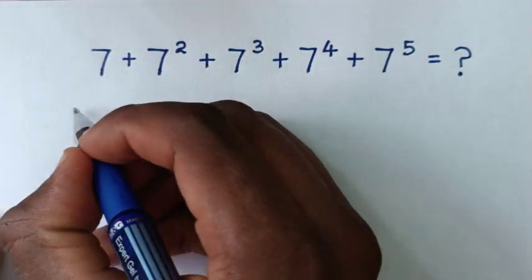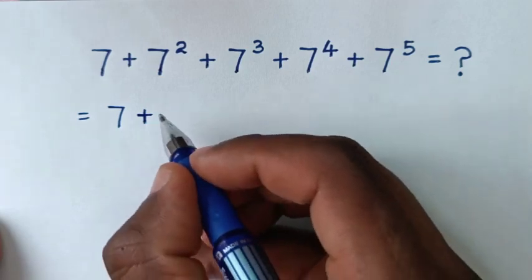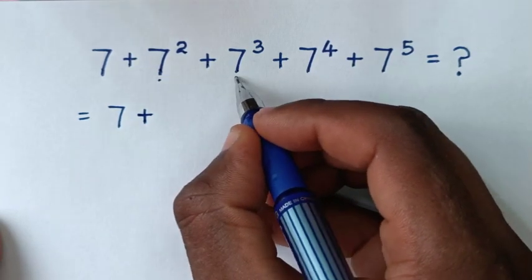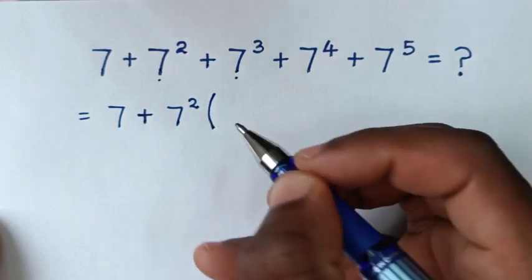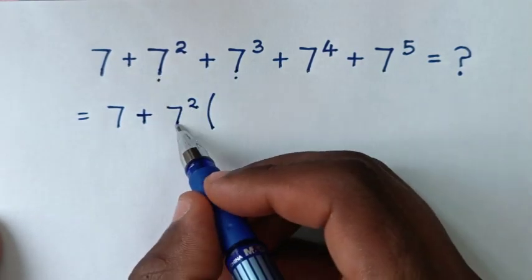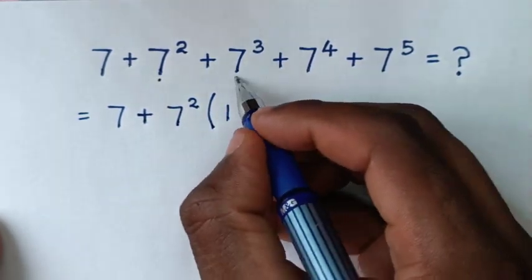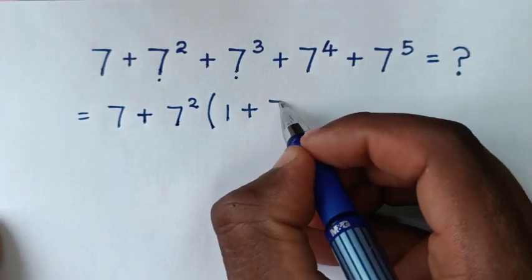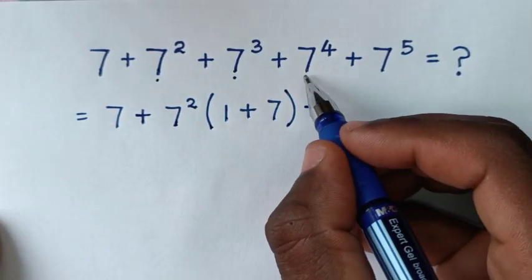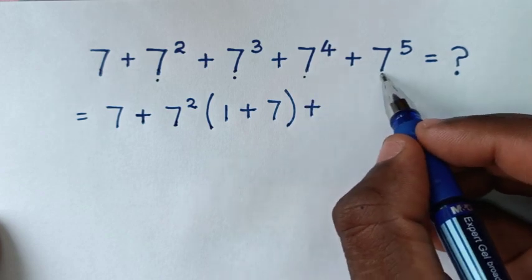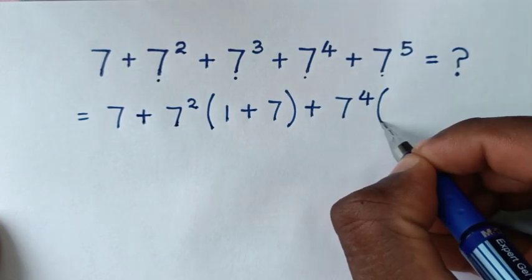So it will be equal to 7, then plus, from here, 7 square plus 7 power 3 — 7 square is common, so we'll take it out of the bracket. Then 7 square divided by 7 square is 1, plus 7 power 3 divided by 7 square is 7, bracket. Then plus, from here, 7 power 4 plus 7 power 5 — 7 power 4 is common, so we'll take it out of the bracket.